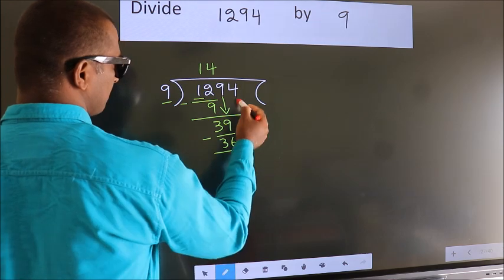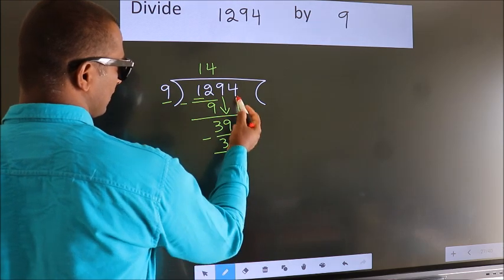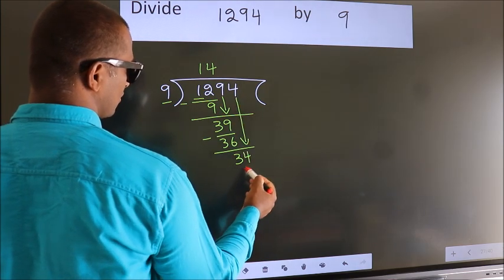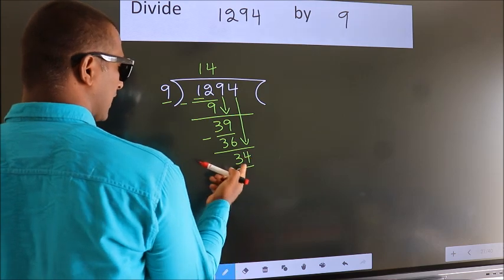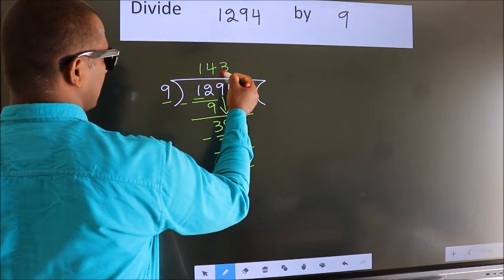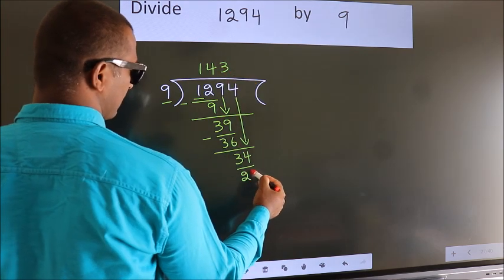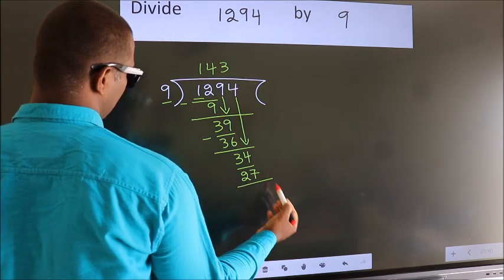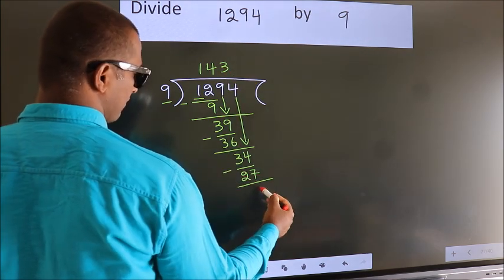After this, bring down the next number. So, 4 down. So, 34. A number close to 34 in the 9 table is 9 times 3, which is 27. Now we subtract, we get 7.